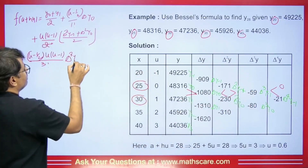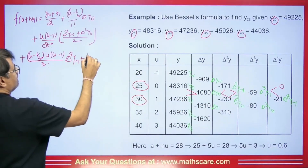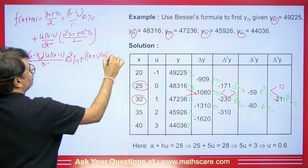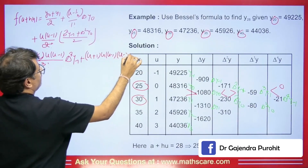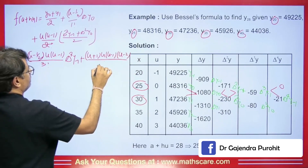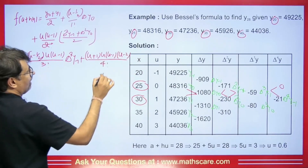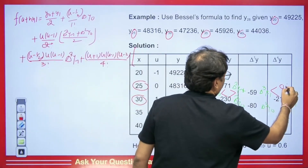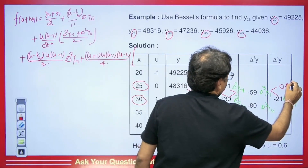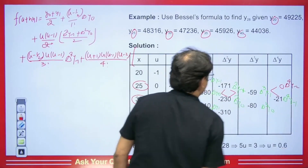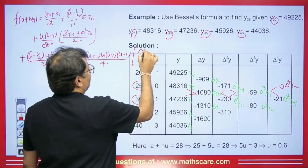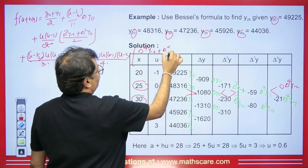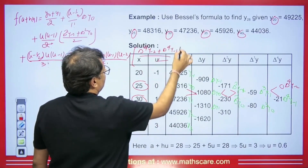Then we have (U+1)(U)(U minus 1)(U minus 2) upon 4 factorial, and this is the average of del⁴Y minus 1 and del⁴Y minus 2. So the formula includes the term del⁴Y minus 2 plus del⁴Y minus 1 divided by 2.